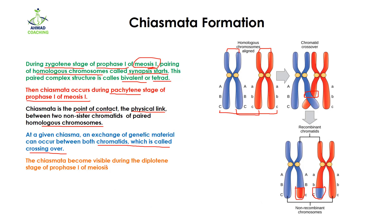The Chiasmata become visible during the diplotene stage of prophase 1 of meiosis 1. This Chiasmata will keep the two homologous chromosomes in close contact with each other, and during that the genetic material will exchange and it becomes visible during the diplotene phase when two chromosomes are moving towards the opposite poles.